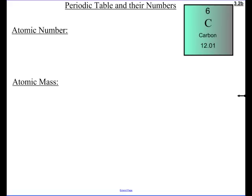As you can see, this is called periodic table and their numbers. And the first number that we have to go over is this atomic number. And the atomic number simply tells you the number of protons in an atom. So the atomic number is the number of protons.